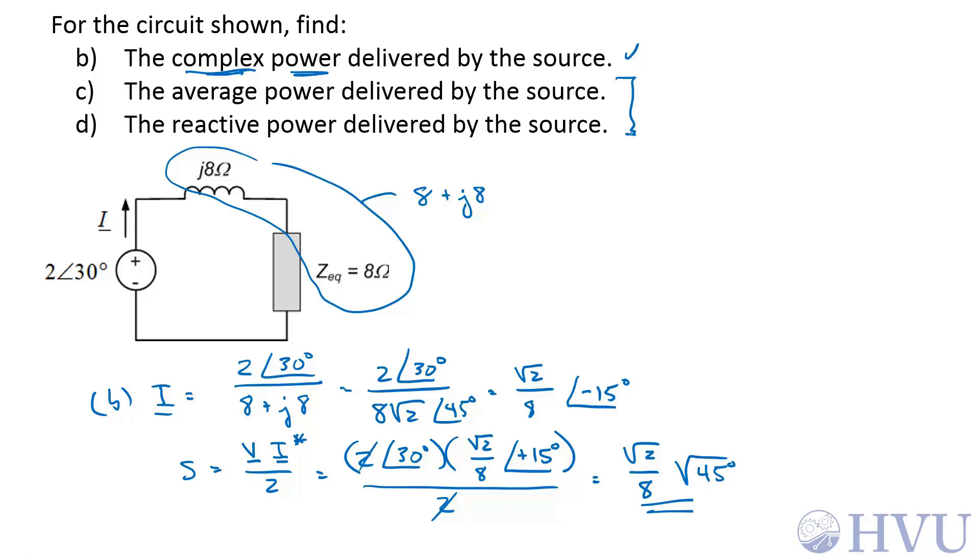For parts C and D, once I have the complex power, it's easy to find the average power and the reactive power from the real and imaginary parts of S. So for C, P is equal to the real part of the complex power S, so that is square root of 2 over 8 times the cosine of 45 degrees. Cosine of 45 degrees is 1 over root 2, so this becomes 1 eighth of a watt for part C.